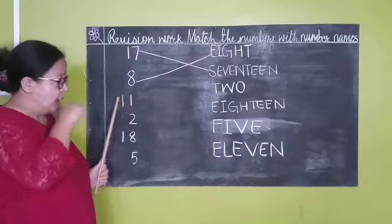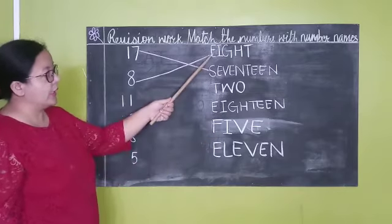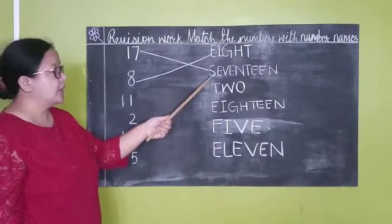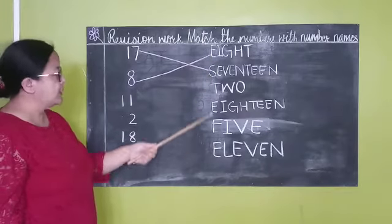What number? 1, 1, 11. Let's find out. Now 8 is already done. 17 is already done. Now we will find out from here. Where is 11?